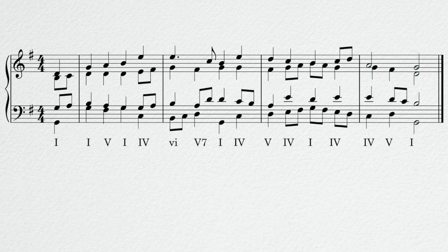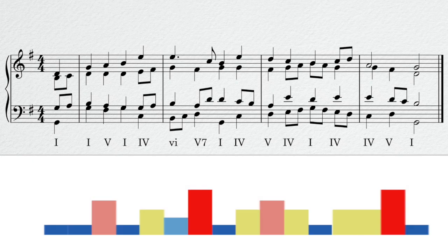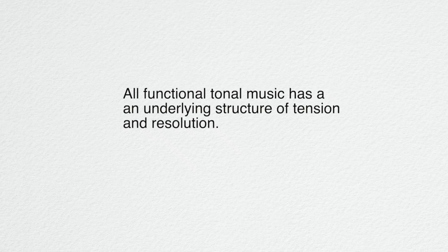So if we put all of that together in the music, it looks like this. So let's listen again and see if you can match up the representation of stability and instability with the music that you're hearing. The most important point in all of this is to remember that all functional tonal music has this kind of underlying structure of tension and resolution, and that that gives music a sense that it is moving forward and going places, telling a kind of story over time, which is a big part of its meaning and of its emotional impact on us.